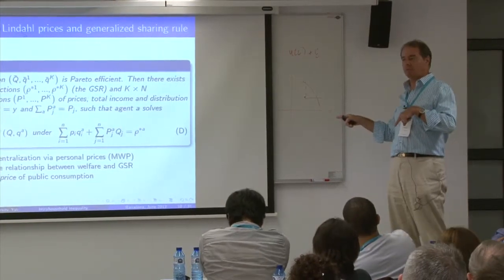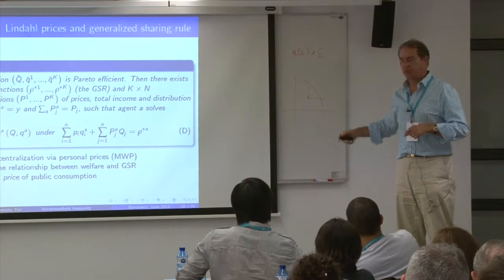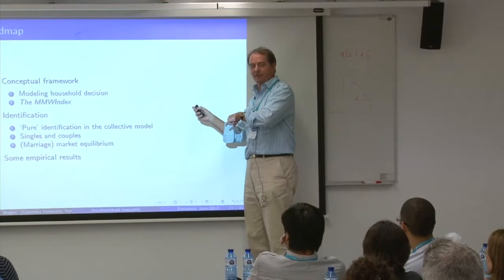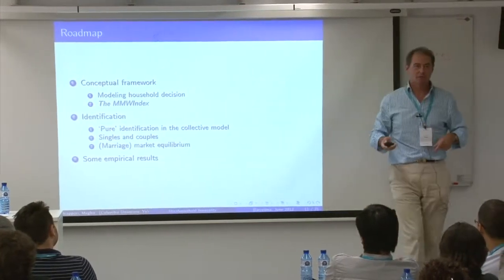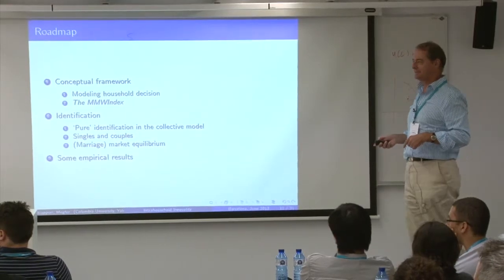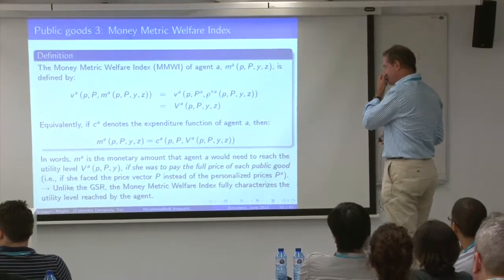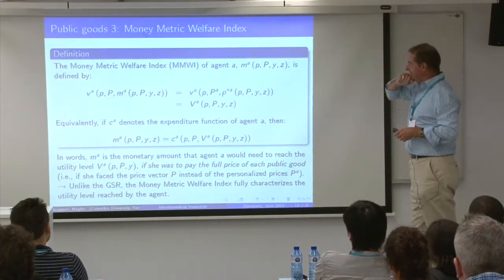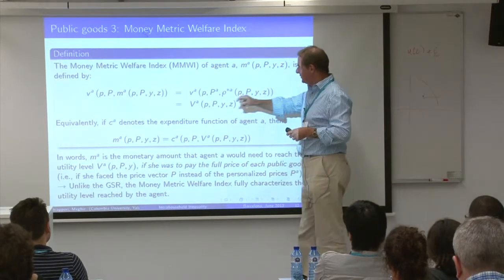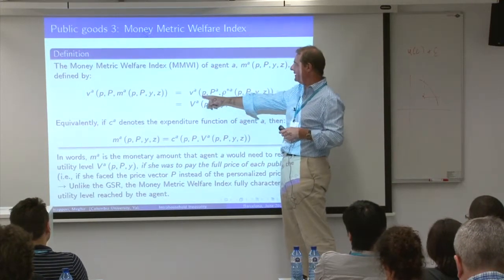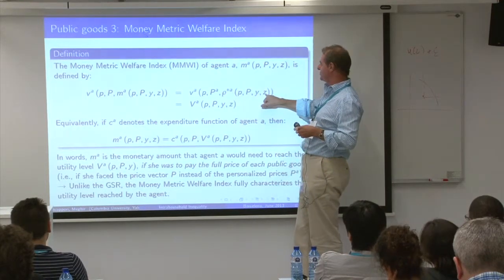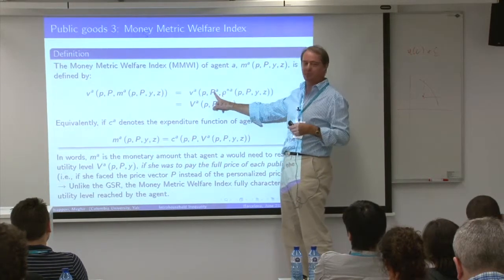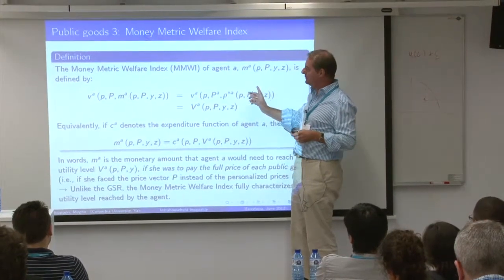That's our definition — the Money Metric Welfare Index. The right-hand side is the collective indirect utility. At the end of the day, my utility depends on the Lindahl income share, the market prices I pay for the private good, and my personal price for the public good. What I'm asking is: how much money would I need to get exactly the same utility level if I were to pay the public good at the full market price?